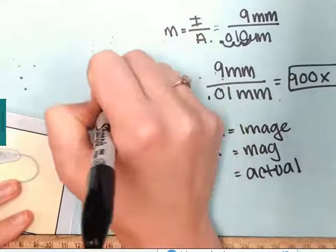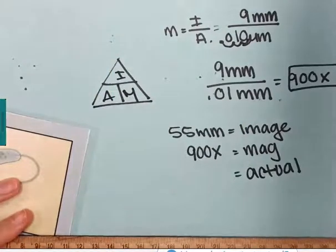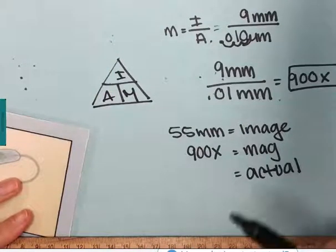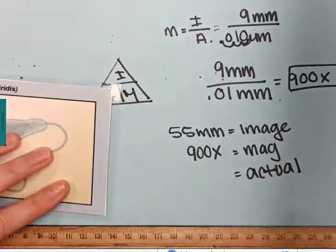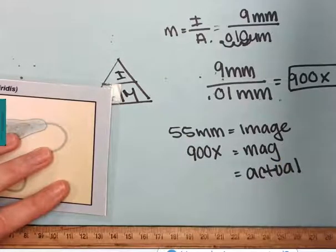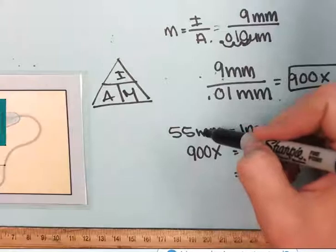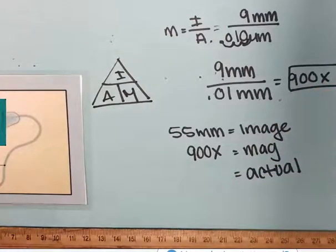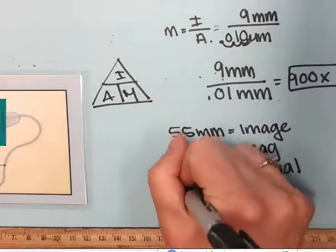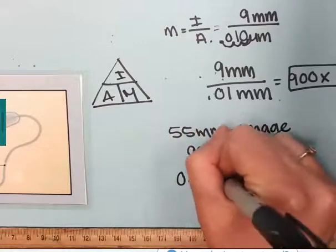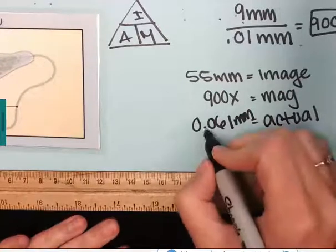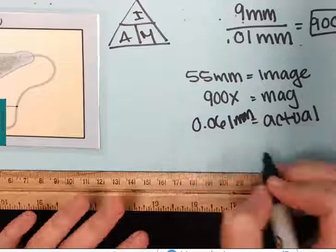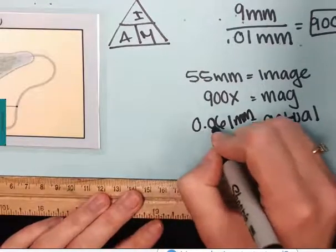The I-A-M triangle. I know image and magnification. What I'm trying to figure out is the actual, and so it's image divided by magnification. Again, 55 millimeters divided by 900 will give me 0.061 millimeters.